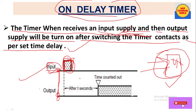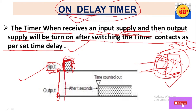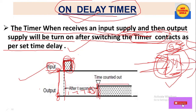Suppose we have set a 5-second delay. When we apply input supply to the on delay timer, it starts counting: one, two, three, four — after it reaches five seconds, it stops counting. Then the timer contacts change and the output signal goes high. During counting the output is low; only after the 5-second delay does the output go high.